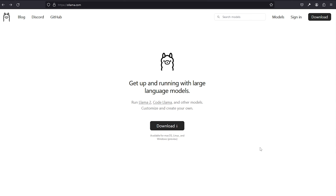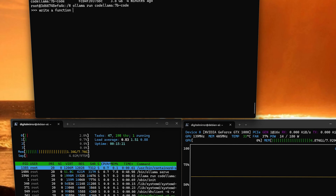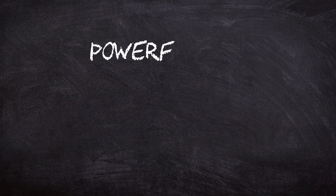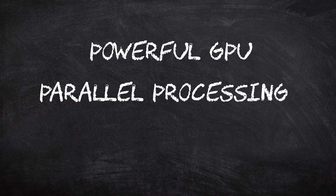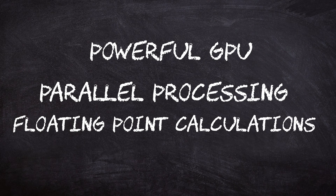Tools like Ollama are game changers, letting you run your very own AI models right on your local machine without having to spend a dime. However, there are a few things we need to consider before installing them. The first thing is that AI loves to sit on resources. To get the most out of it, ideally you want to run your AI on a really beefy GPU. GPUs are just better at this thanks to their parallel processing and for performing floating point calculations a lot faster than a regular CPU.